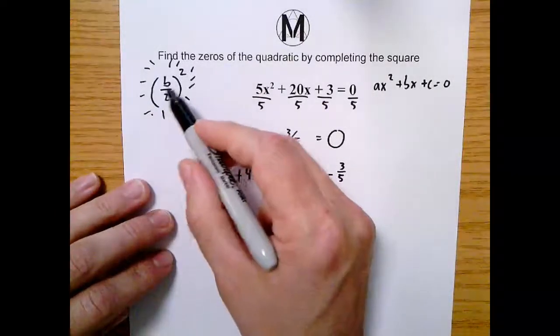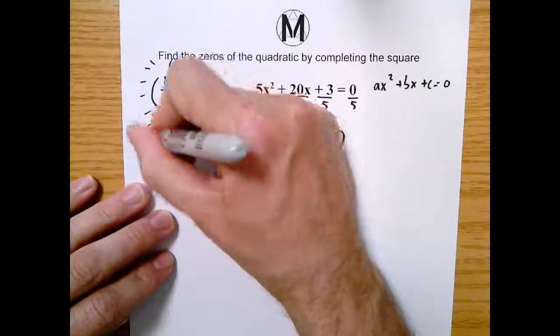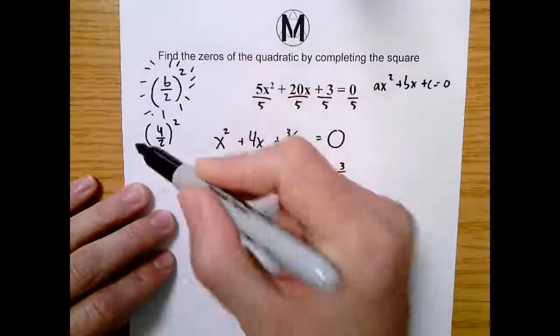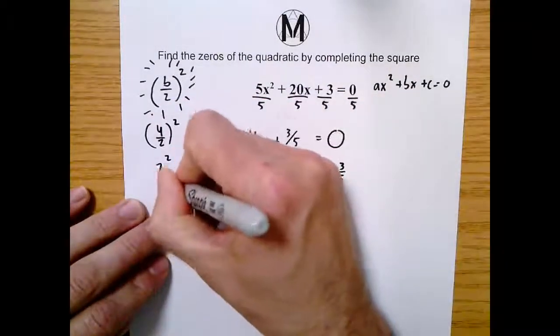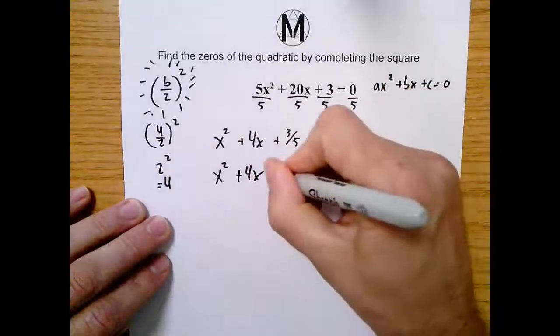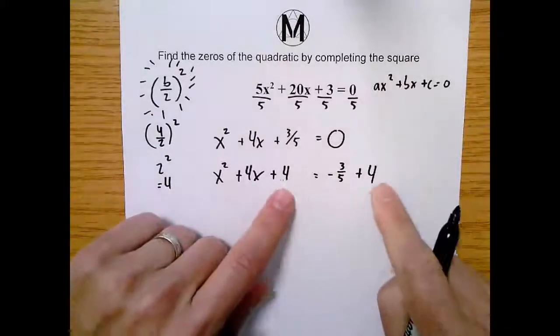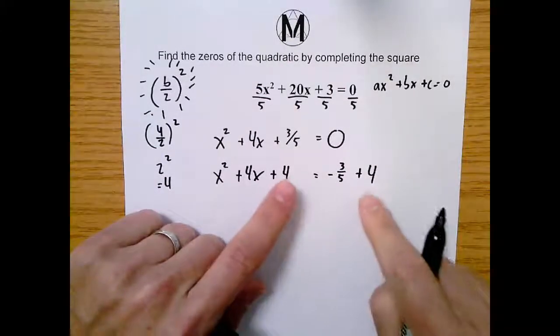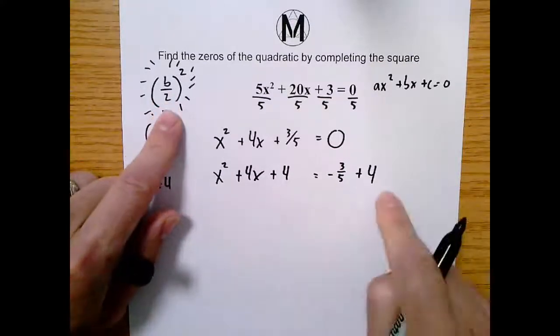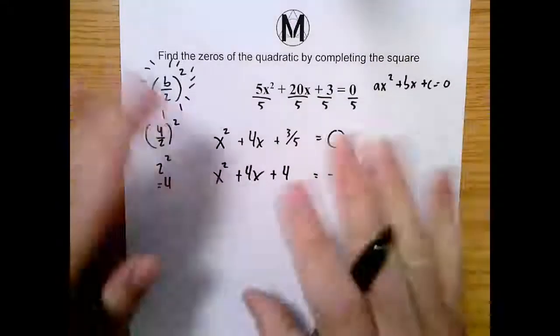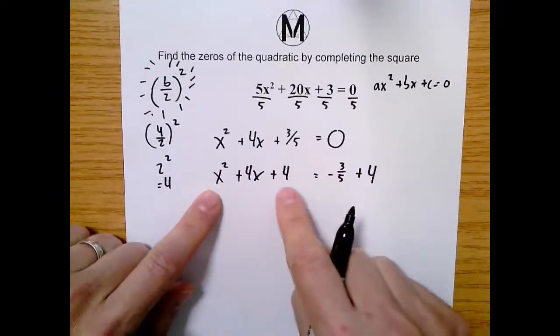So coming over here, b divided by two squared - well, my b value is four, so that's actually saying four divided by two squared. Four divided by two is two, and two squared is four. So I'm actually adding four to both sides. And remember, don't forget that it goes to both sides. This piece, we're adding b over two squared - I added it here and here because that's algebra. You do it to one side, you do it to the other.